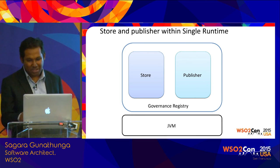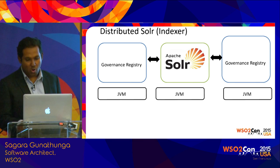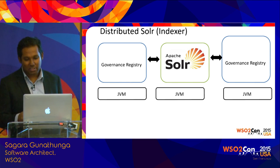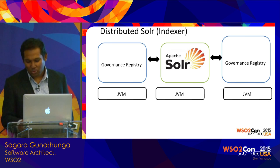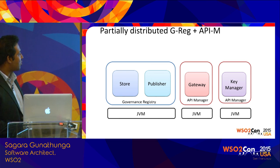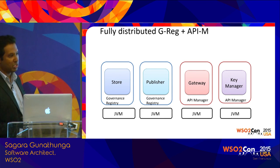These are some deployment patterns. You can have store and publisher embedded together, or distributed separately. A new option is externalizing Solr — if you need very high-scale search, you can externalize the Solr indexing engine so a cluster of registries talks to a centralized external Solr server. For API Manager distribution, you can have store and publisher in one JVM with key manager and gateway separate. There are no separate API Manager publisher and store — those are unified with the governance registry store and publisher — giving you partially or fully distributed deployment depending on your capacity and requirements.